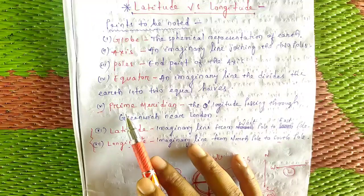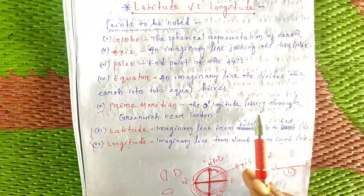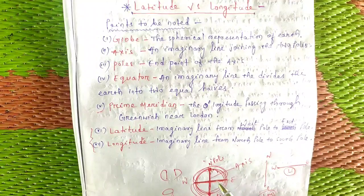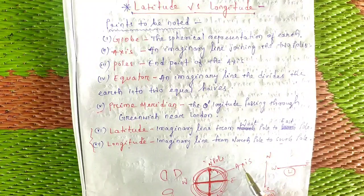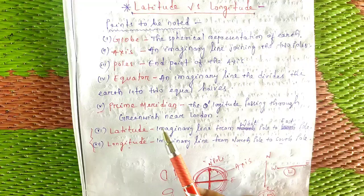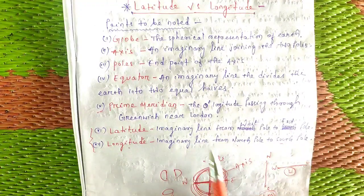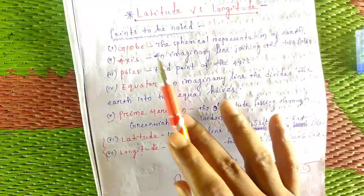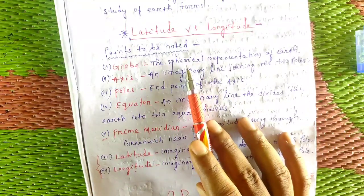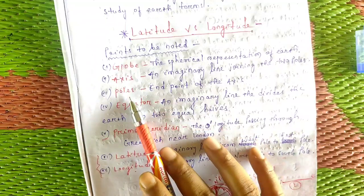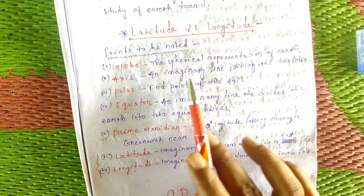The zero-degree line is longitude passing through Greenwich near London, which is called the Prime Meridian. In review: a globe is the spherical representation of the earth. Axis and pole are known — the axis is the imaginary line joining the poles.